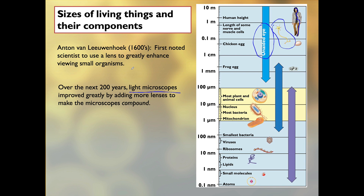Van Leeuwenhoek used things like pond water and tiny organisms he'd find in different substances to look at. With light microscopes getting better decade after decade, we're able to look further into small things. They eventually added a second lens to the first, which allowed you to multiply magnification — for example, 10 times 10 equals 100 times magnification. As those light microscopes improved, we were able to see most plant and animal cells, the nucleus inside a cell, bacteria, and even mitochondria in the really good ones. That's the range of the light microscope.